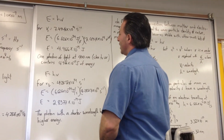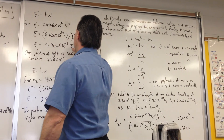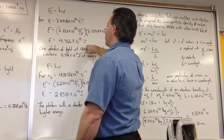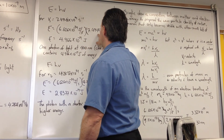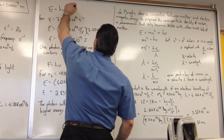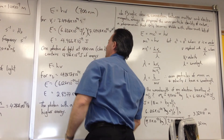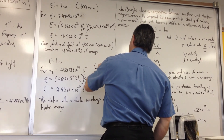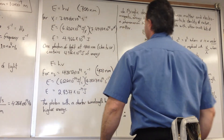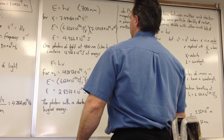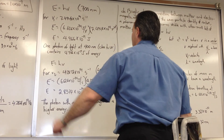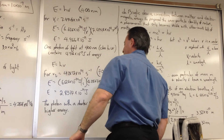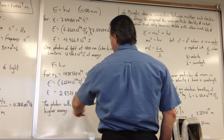We then take E equals h nu and plug in the values for frequency, multiplying by Planck's constant. The photon at 400 nanometers — with a frequency of 7.49 times 10 to the 14 hertz — has an energy of 4.96 times 10 to the minus 19 joules. The photon at 700 nanometers has lower energy. So the shorter wavelength photon has higher energy, and the longer wavelength photon has lower energy.